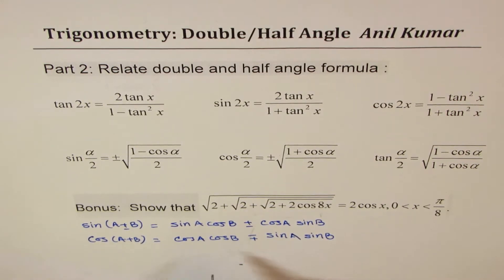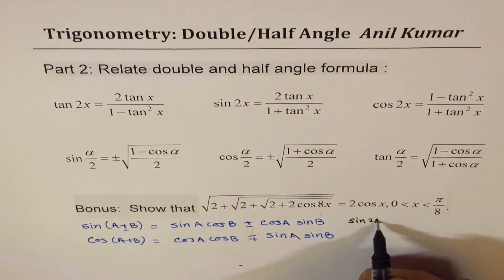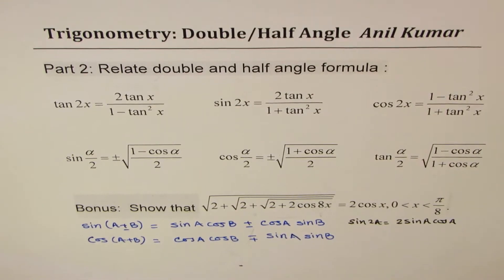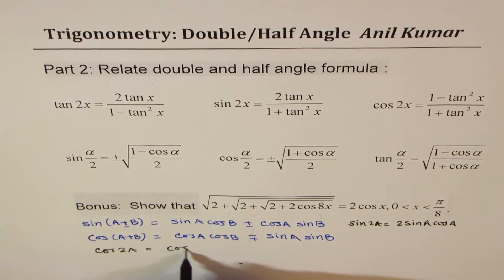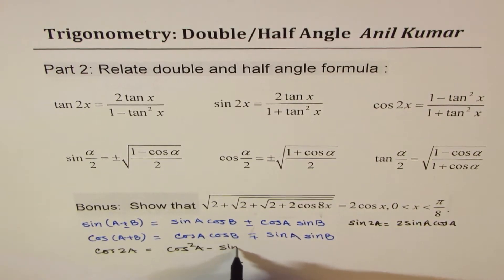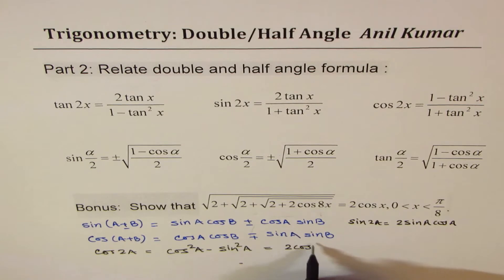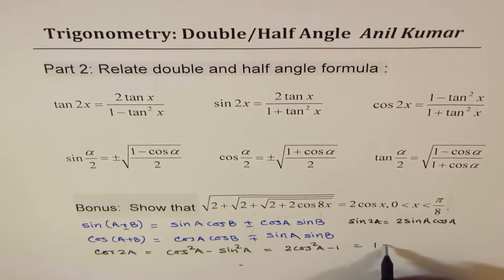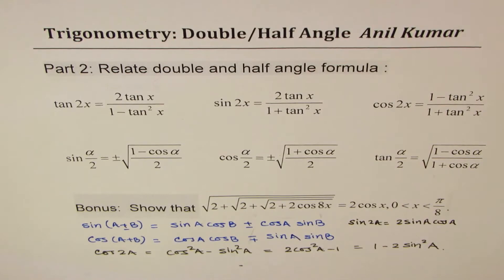From there, we did develop double angle formulas. Sin 2a equals 2 sin a cos a. Cos 2a can be written as cos squared a minus sin squared a, or in terms of cos as 2 cos squared a minus 1, or in terms of sin as 1 minus 2 sin squared a. So this is what we did in part 1.